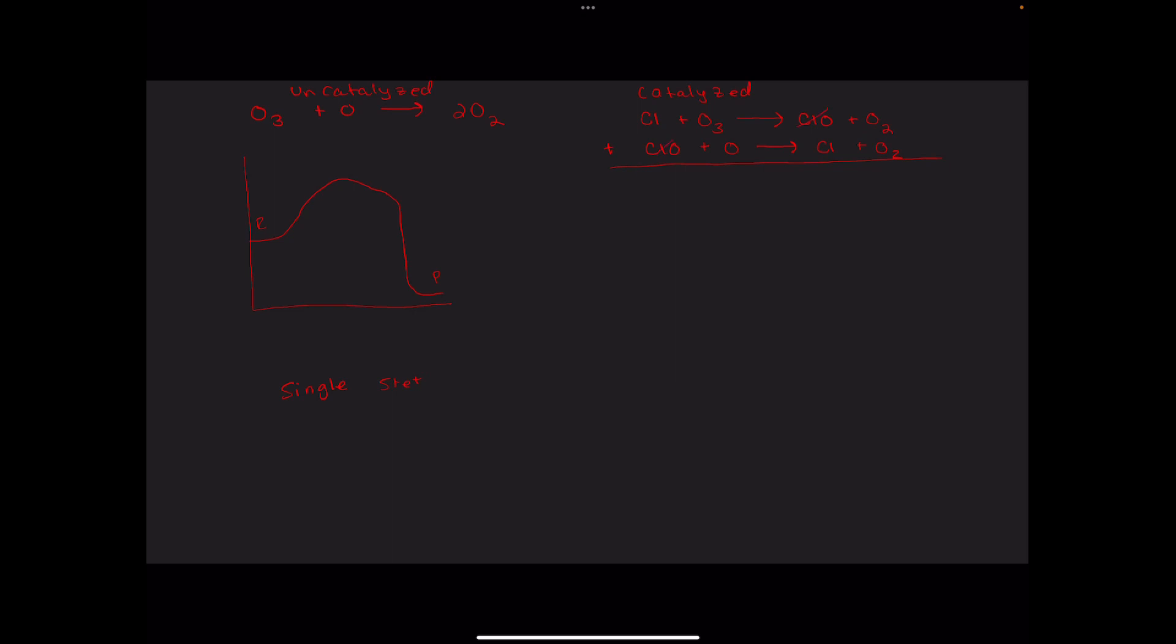Our overall equation is the same. Ultimately, it's the ozone and the oxygen that are changing, and we're producing oxygen molecules. But the presence of that chlorine changes the mechanism. We go from a single-step mechanism to a two-step mechanism.